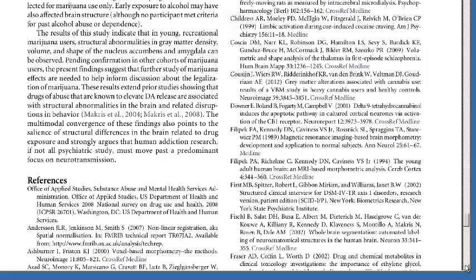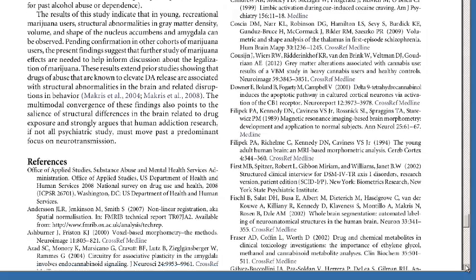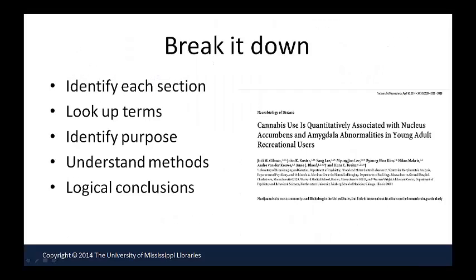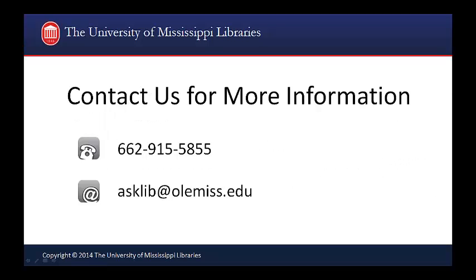At the end of the article is a list of references cited by the authors. In conclusion, try to break it down. Identify each section of the research article. Look up any words you don't understand. Figure out what the purpose of the research was. Try to understand the methods that were used and the data that was collected. See if you come to the same logical conclusions that the researchers did. Thank you for watching this tutorial.